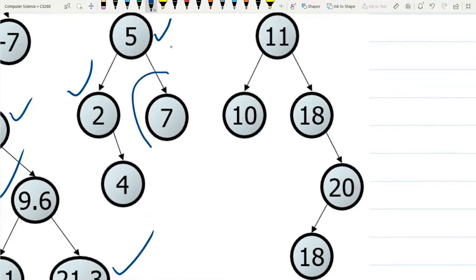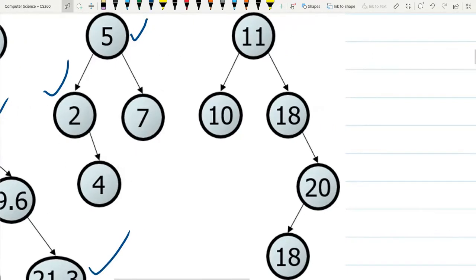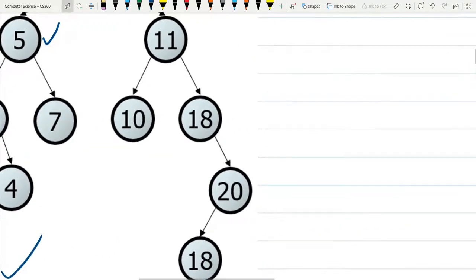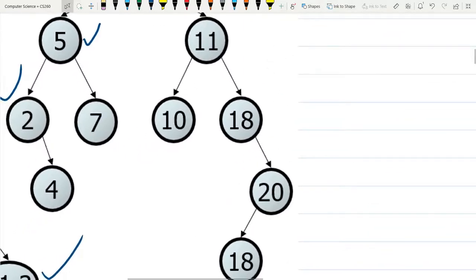We don't really need to check the leaf nodes because, as I described earlier on our first example, they're automatically a binary search tree because there's nothing below them to be out of order. So all the leaves, these are called leaves, all the leaves themselves are binary search trees. Even though they don't have children, it's fine.